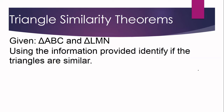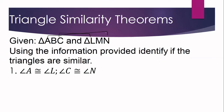Now let us have another activity with triangles ABC and LMN. Given that angle A is congruent to angle L, and angle C is congruent to angle N — A corresponds to L and C corresponds to N, so two pairs of corresponding angles are congruent. That is enough to conclude that triangle ABC is similar to triangle LMN by AA similarity theorem.